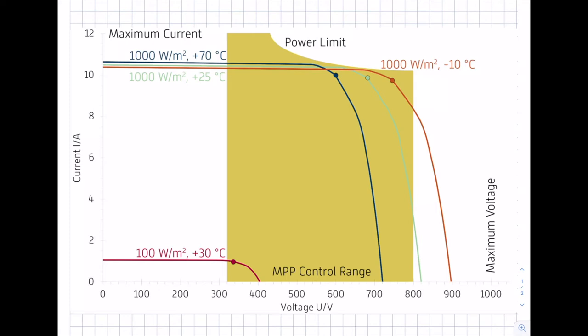Next, there is an MPP control range. The inverter is only able within this MPP voltage range to identify the maximum power point on the IV curve of the PV generator. In this case, the range goes from 320 volts up to 800 volts. The MPP of the marked spots on the IV curve must be within this range for the inverter to track the maximum power point. The green curve represents the IV curve under standard testing conditions.